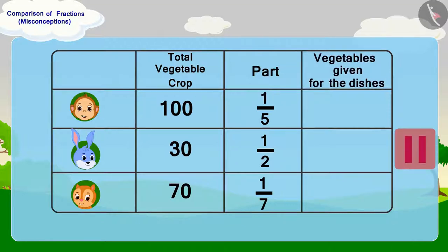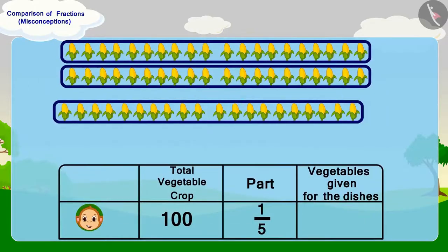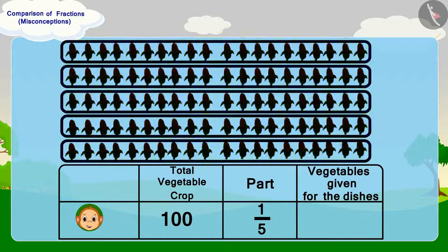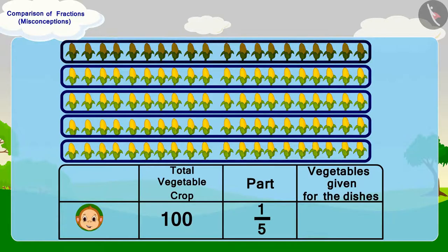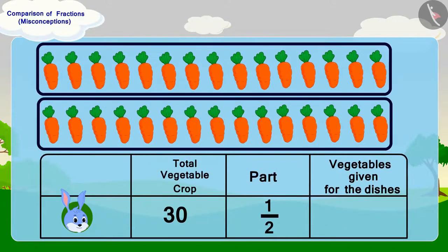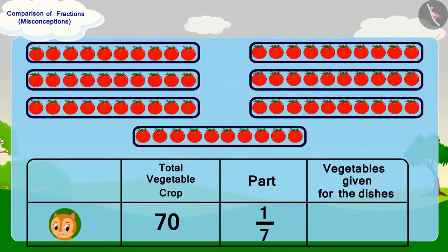If you want, you can stop the video and find the answer. Well done, children — you have found the right answer! Babban gave one-fifth of 100, which is 20 vegetables. Banni gave half of 30, which is 15 vegetables. And Chandan gave one-seventh of 70, which is 10 vegetables.